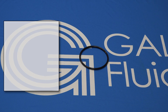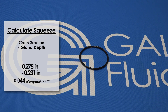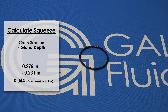Step 3 is where we find the amount of squeeze in inches or millimeters. To quantify o-ring squeeze, subtract the gland depth from the cross sectional diameter. For example, if the o-ring cross sectional diameter is 0.275 inches and its gland depth is 0.231 inches, subtract 0.231 from 0.275. This compression value is the amount of the o-ring that is compressed by mating hardware.